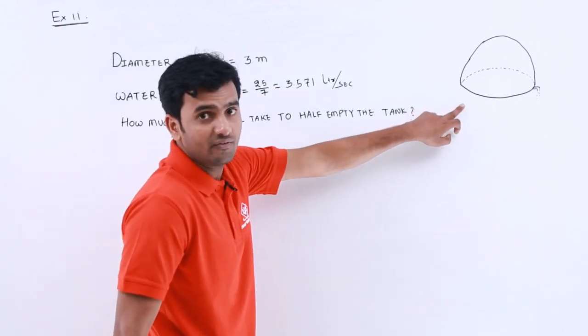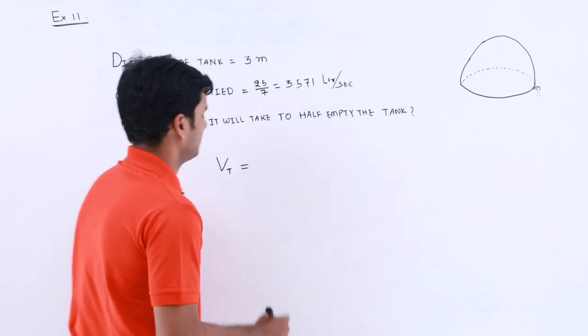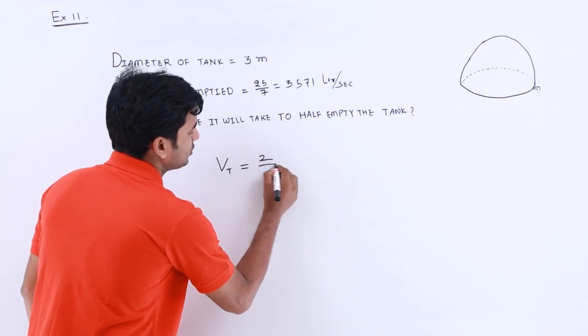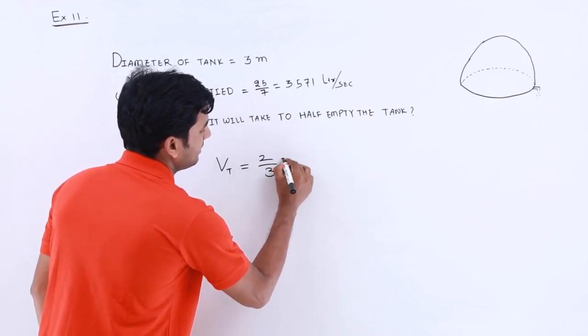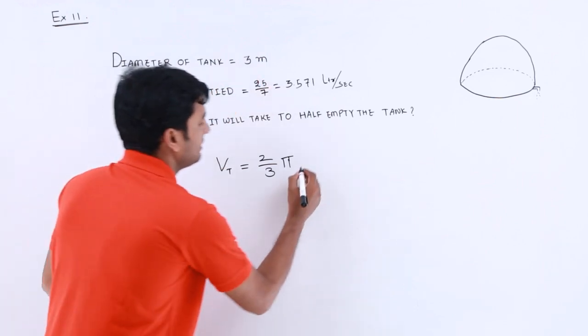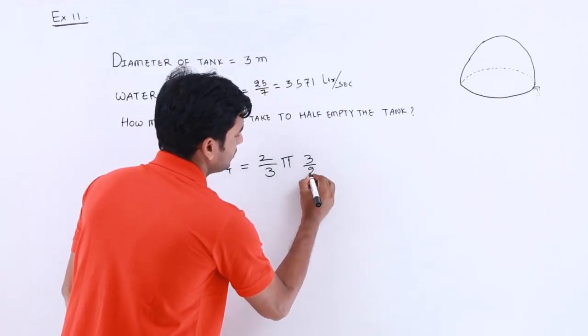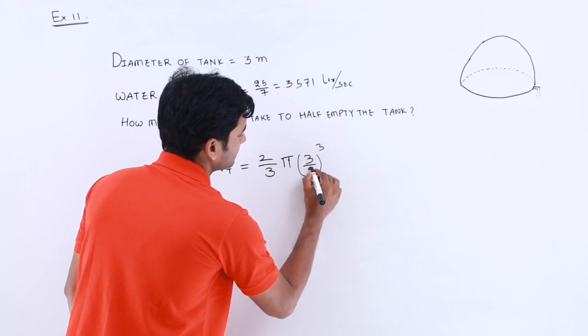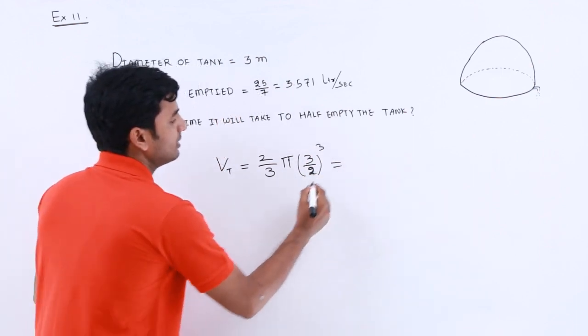So half of sphere volume will be hemisphere volume, that is 2 by 3 π r cubed. We know the diameter, the radius will be half of this diameter, 3 by 2, whole cubed.